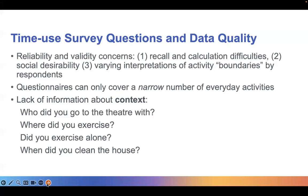Another drawback is that you can only cover a narrow set of activities. It is not really possible to cover everything in a conventional social survey. And there is also lack of information about context, which actually limits the types of research questions that social scientists can answer with regards to time use. For example, survey questions do not provide any information on who the person watches TV with or whether they get their physical exercise done in the gym or at home. And this information is quite important for understanding human behavior and societal trends.